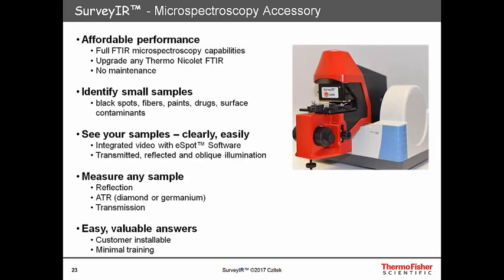To conclude, Surveyor provides affordable yet very high microspectroscopy performance. We can identify small samples from various substrates and of various morphologies. The image quality and ease of use allows you to visualize, document, and see your samples easily and clearly. There is a lot of flexibility in the infrared spectroscopy — we can measure samples by reflection, ATR using either diamond or germanium, and transmission. The system is customer-installable and can be used with very minimal training. I'd like to hand the presentation back to Matt Gunlock, who will conclude and ask some common customer questions.